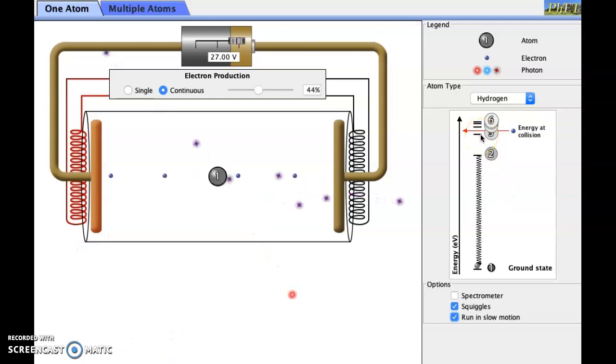When we excite the atom up to the third energy level here, does it always jump all the way down to the ground state? Does it always jump to the second level and then to the ground state? Are there multiple options available?